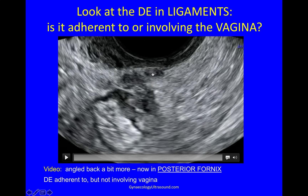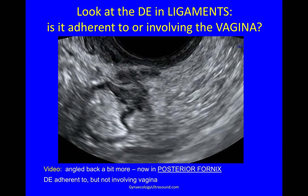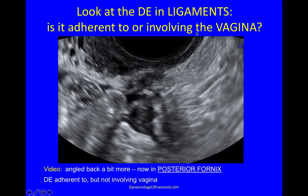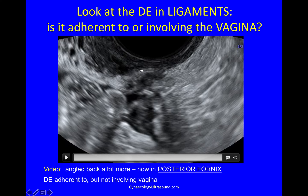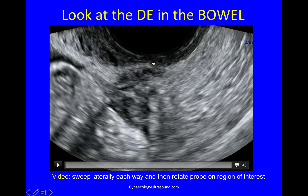So we know that there's deep endo in the ligaments and in the bowel. Let's look at the ligaments first. Is it adherent to and/or involving the vagina? We've angled back a little bit more — we're in the posterior vaginal fornix, looking for this deep endometriosis. You can see normal vaginal wall, you can see the ligamentous deep endometriosis, and it's attached to but it's not involving it. There isn't a vaginal nodule.